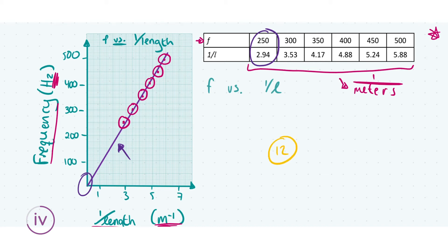This part was worth a total of 12 marks. The breakdown: three marks for completing the table — converting lengths from centimeters to meters and taking the reciprocal; three marks for labeled axes with units (hertz for frequency, m⁻¹ for 1/L); three marks for correctly plotting all six data points; and three marks for the line of best fit through the origin.